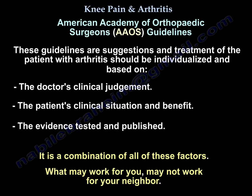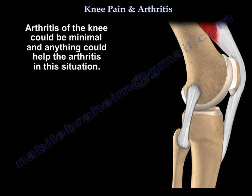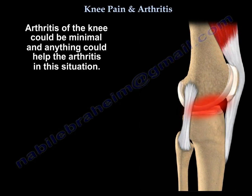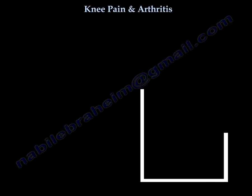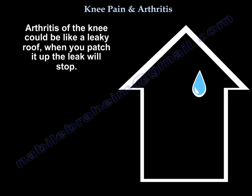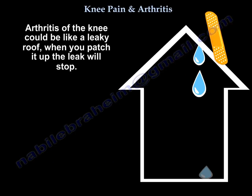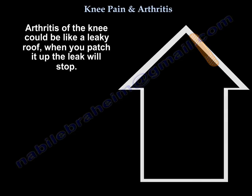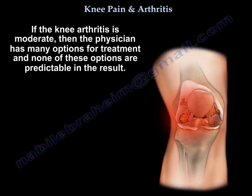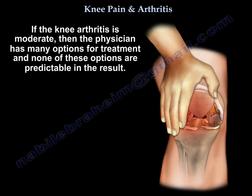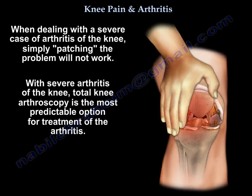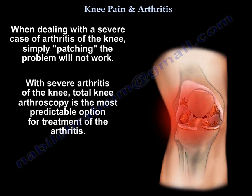If a treatment works for you, it may not work for your neighbor. Arthritis can be minimal, and almost anything can help in that situation — it's like a roof with a small leak: you patch it and the leak stops. But if the arthritis is moderate, the physician has many treatment options and none are fully predictable — like a big leak in the ceiling that may or may not be fixable with a patch.